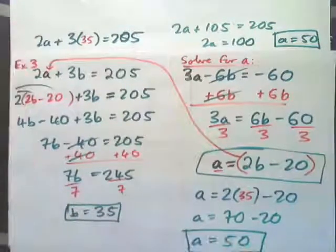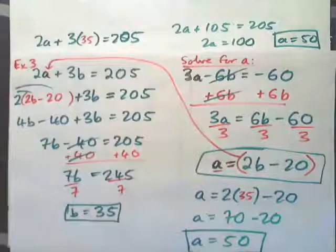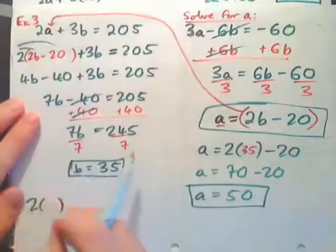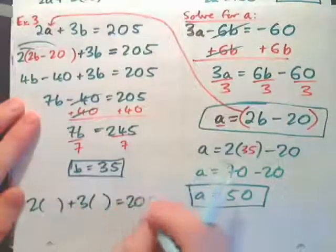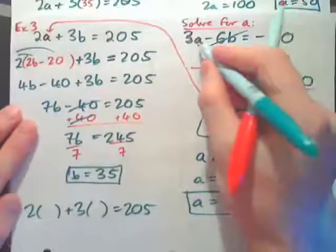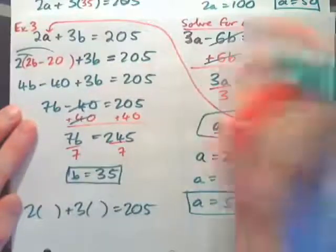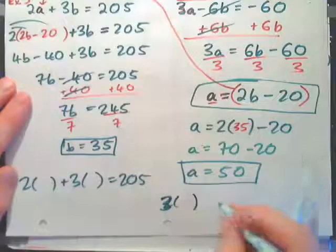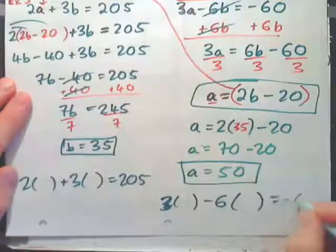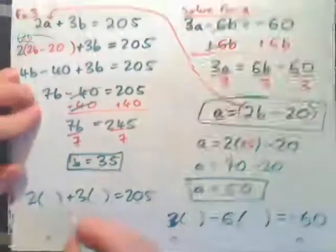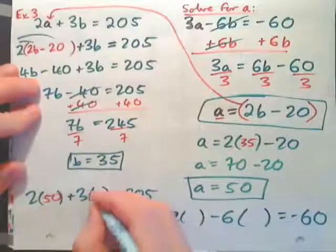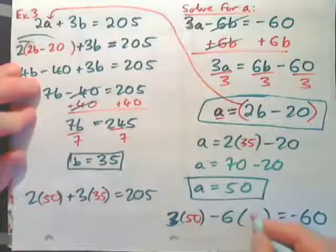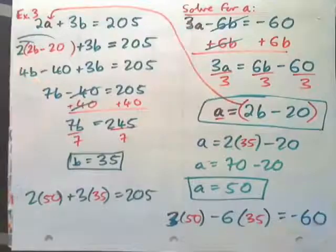To check, plug both values into both original equations. 2 times 50 plus 3 times 35 should give 205, and 3 times 50 minus 6 times 35 should give negative 60. Verify both to confirm the solution is correct.